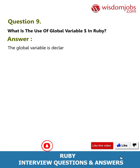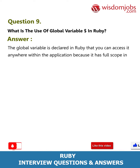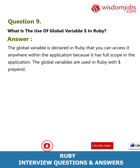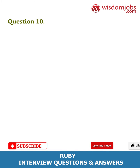Question 9: What is the use of the global variable dollar sign in Ruby? Answer: The global variable is declared in Ruby so that you can access it anywhere within the application because it has full scope in the application. The global variables are used in Ruby with a dollar sign prepended.